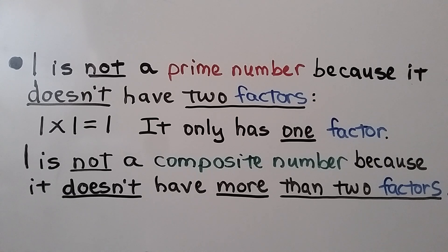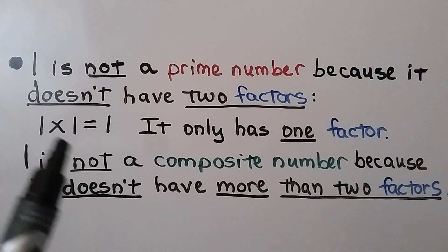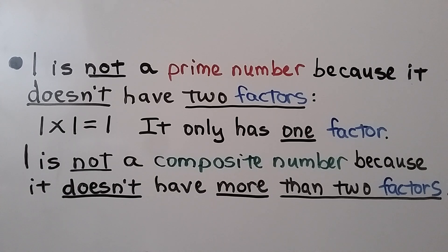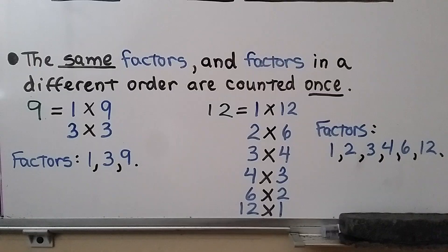1 is a special case. 1 is not a composite number because it doesn't have more than 2 factors, and 1 is not prime either. 1 is neither prime nor composite. Also, factors listed in different orders are counted only once.